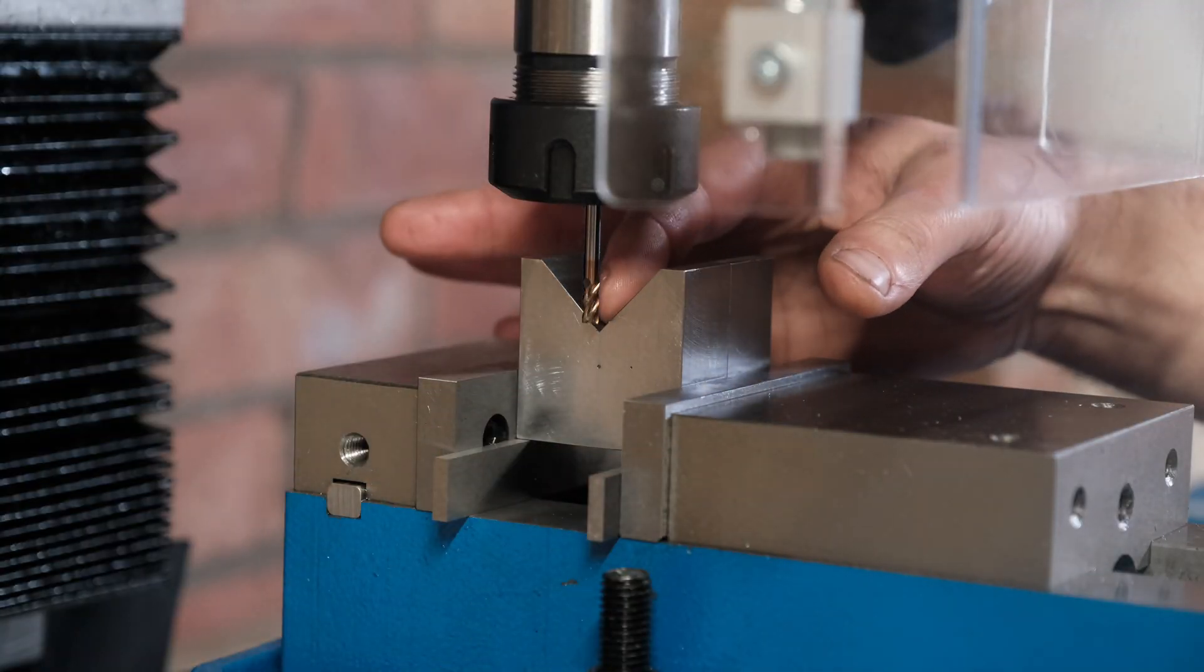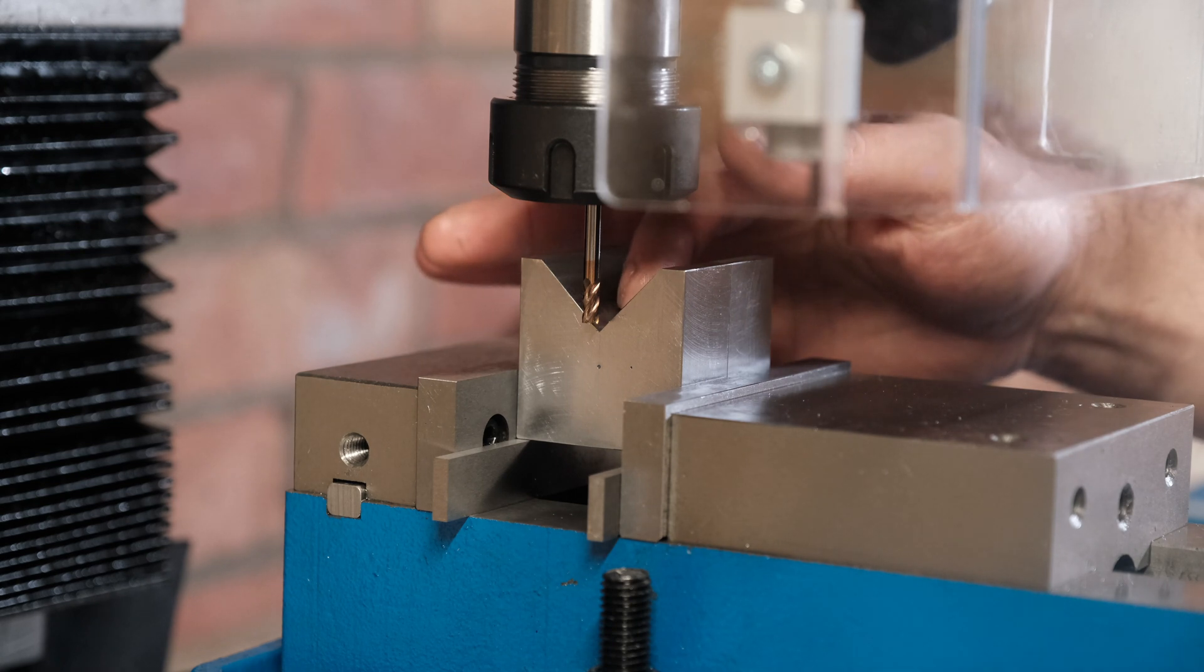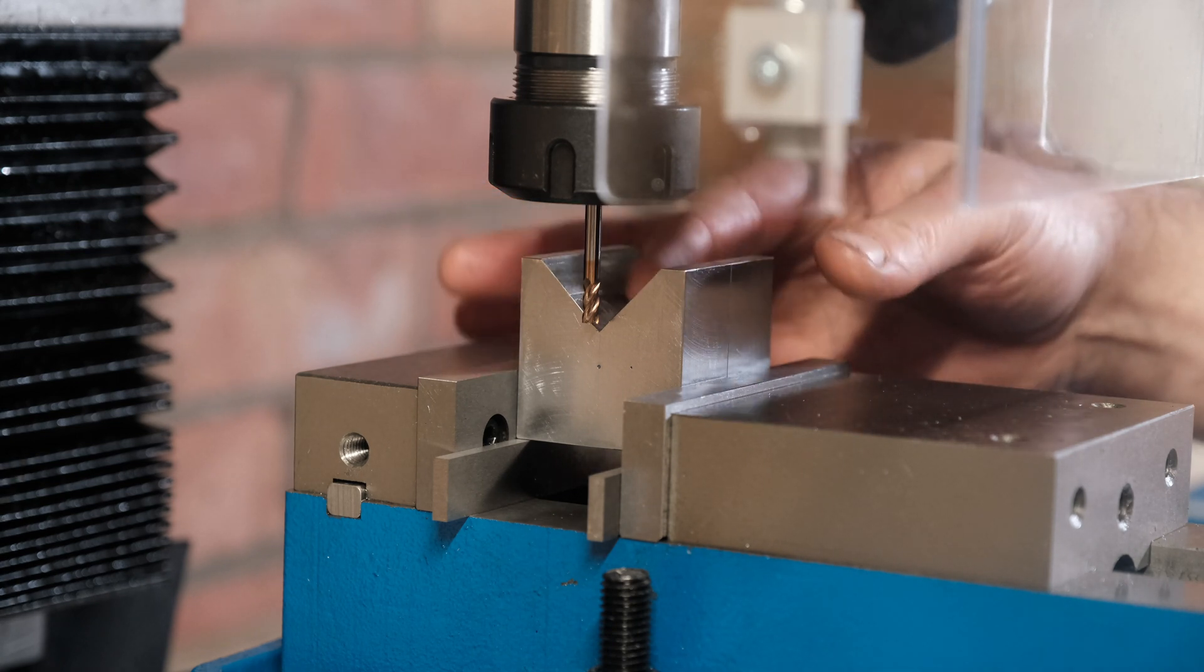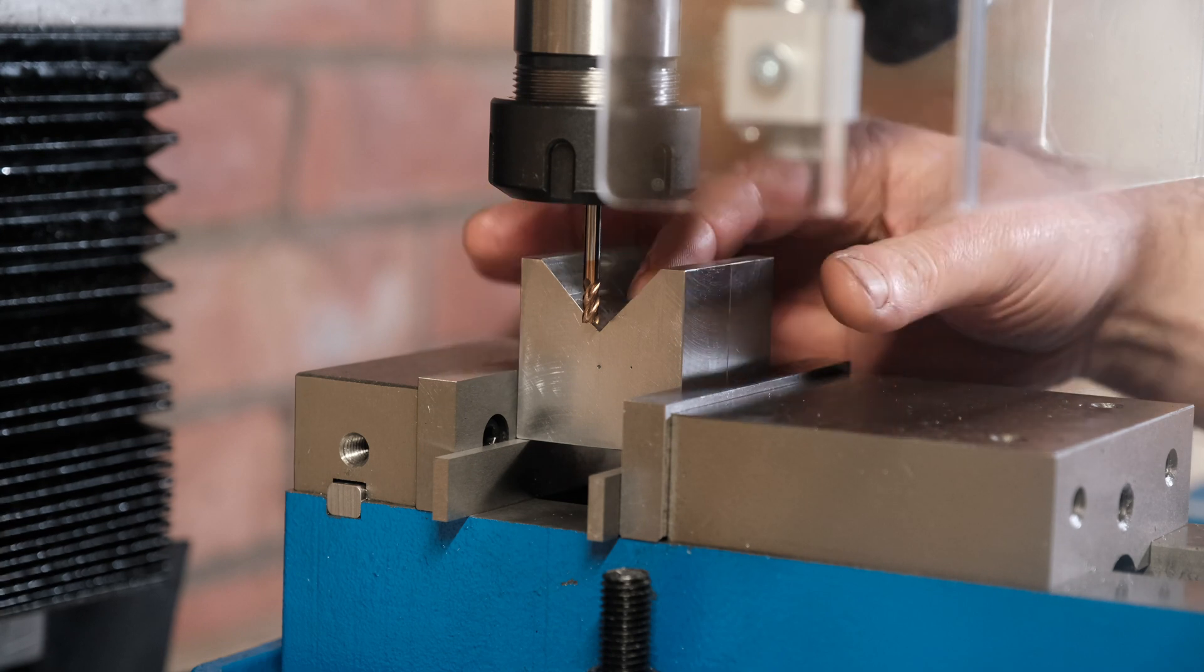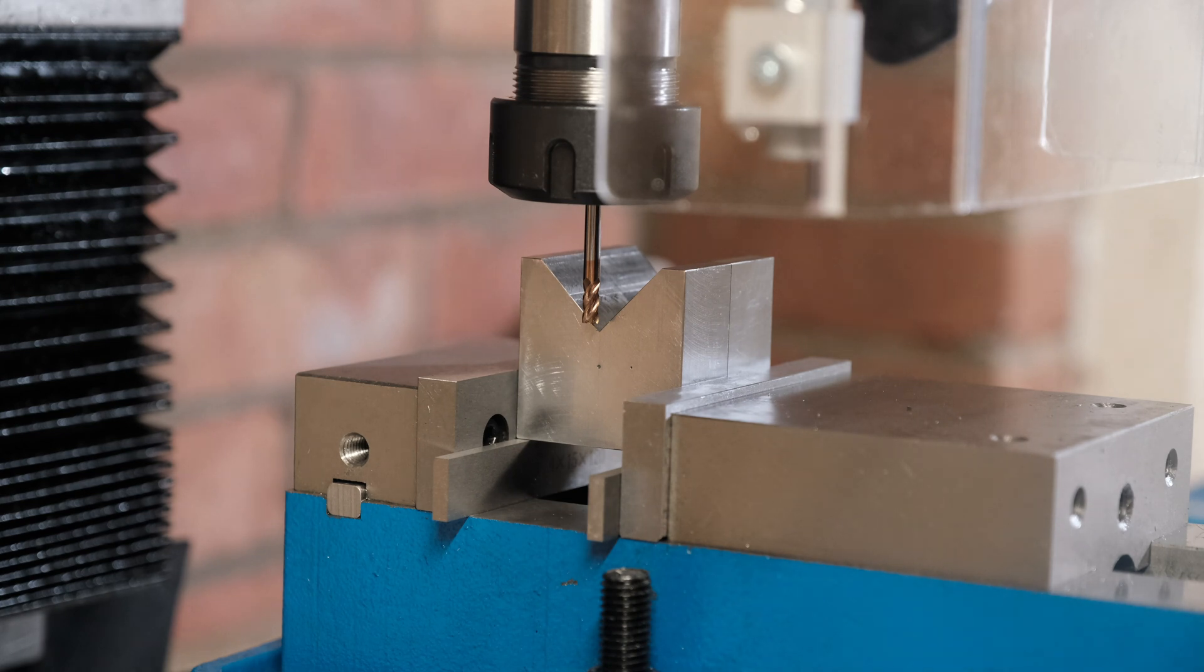So the next job is I just want to cut a slot right at the bottom of these blocks just because there's always a very tiny radius there and I want to make sure I can put square things in there easily rather than just round things. So just cutting a slot should make sure I don't have any issues with that.